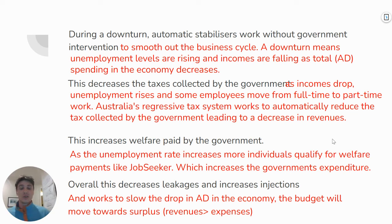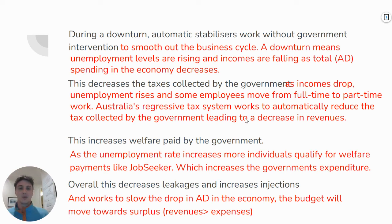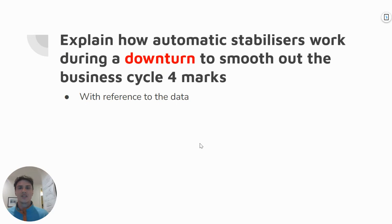Bringing it back to the business cycle: this will work to slow the drop in aggregate demand (AD), and the budget will move from surplus towards deficit as revenues fall and expenses rise. A really key point here — it does not stimulate the economy. A lot of students make this mistake, thinking the budget automatically fixes the economy. No — discretionary stabilizers have to do that work. Automatic stabilizers will just slow the drop in AD. People have moved from full-time to part-time or lost their jobs and are receiving welfare payments — that's not going to stimulate AD; it just smooths the business cycle.